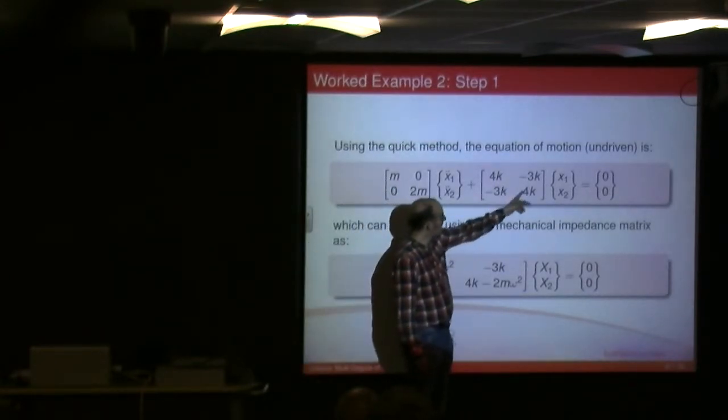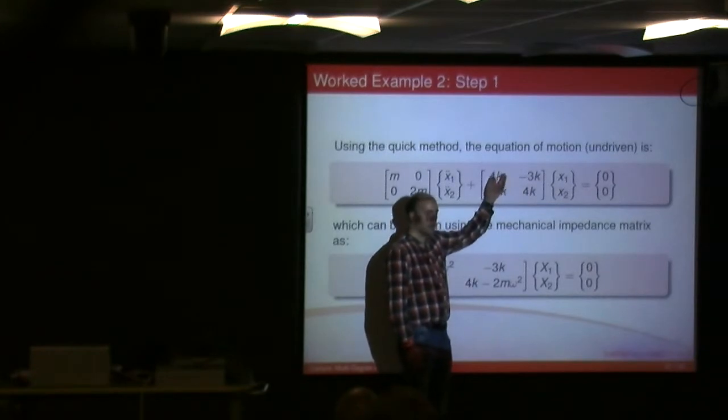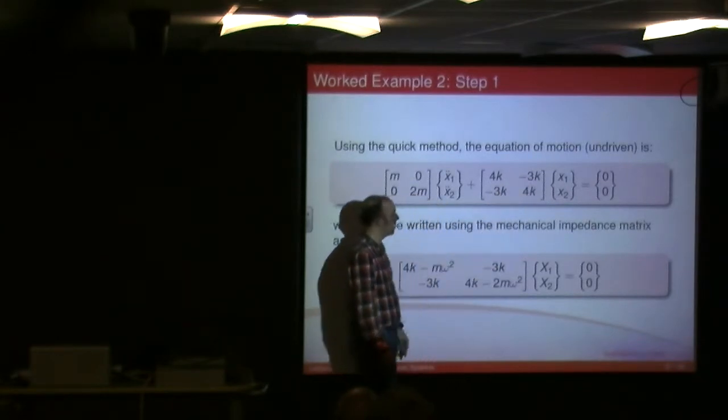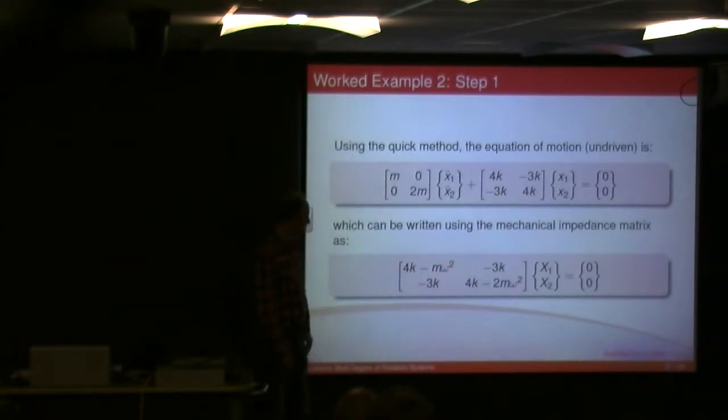Stiffnesses, I've got the diagonal. There's some of the stiffnesses connecting each mass to another mass or to each other. And then obviously this is minus the sum, and the masses connecting each other. So I end up getting that as my stiffnesses matrix. I then multiply the mass matrix by minus omega squared, and then combine the two matrices together to get my mechanical impedance matrix.